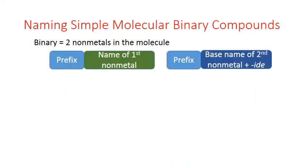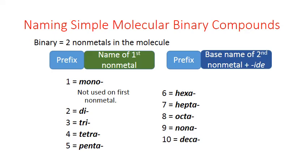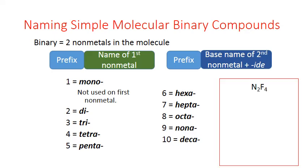To name simple binary molecules, we use prefixes to indicate the amount of each non-metal. The general format is the prefix for the number of the first element followed by the name of that element, then a prefix for the number of the second element, then the base name of the second element with an -ide ending. For example, N2F4: we have two nitrogens, so that's dinitrogen, and four fluorines, so that's tetrafluoride — dinitrogen tetrafluoride.